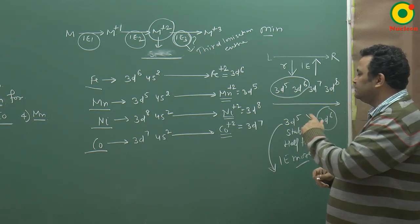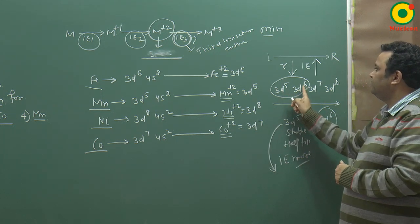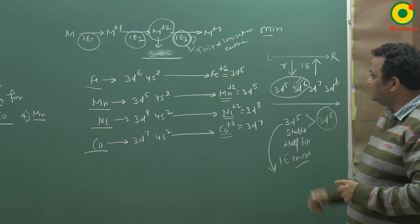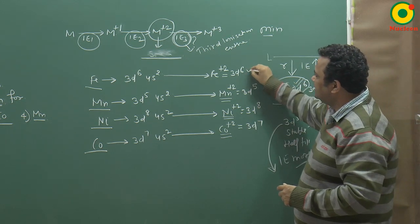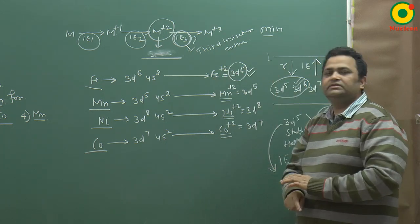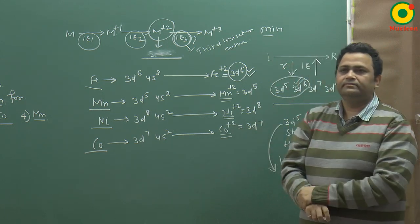So again, there is an exception here. 3d5 is minimum, but it is 3d6. And who is in 3d6? Iron, when it loses 2 electrons, becomes 3d6. So the correct answer is iron. Thank you.